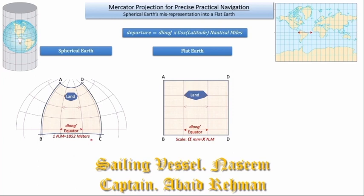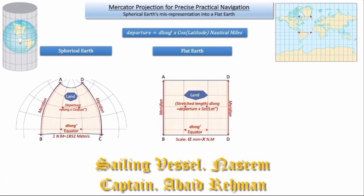However, in the higher latitudes, the distortion increases as we stretch the parallels of latitude. By stretching the parallel in the east-west direction, we have made the departure equal to D-long; therefore D-long becomes departure times the secant of latitude. At this point, the land is showing incorrectly because the meridians have not been stretched and are still showing in their original size.